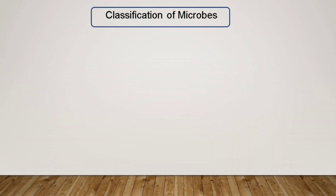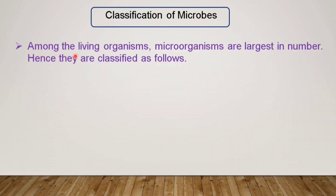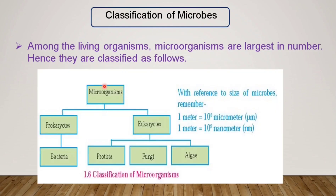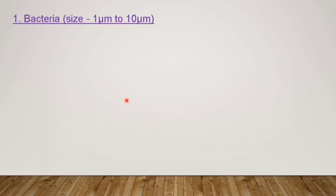Now let's see how microbes are classified. Among living organisms, microorganisms are the largest in number. Microorganisms are divided into two parts: prokaryotes and eukaryotes. Under prokaryotes, we have only bacteria. Under eukaryotes, we have Protista, fungi, and algae. Let us first learn about bacteria.